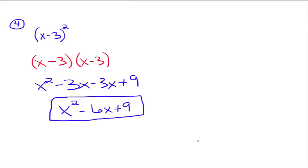The most common mistake made here is students will write down x squared plus 9 — just squaring the x to get x squared and squaring the negative 3 to get plus 9, and leaving it at that. That's confusing the property for raising a product to a power from the rules of exponents we talked about before. That property only applied when the base was a product. This base is not a product — it's a difference, a sum with two terms. If the base is a product, that rule applies. But when the base is not a product, we have to rewrite the base times itself as many times as the exponent requires, then multiply out polynomials.